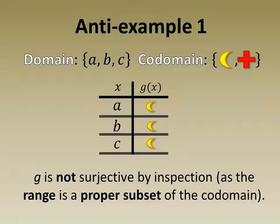As an anti-example, consider a similar situation with a function g. This is not surjective as nothing in the domain is mapped to the cross.